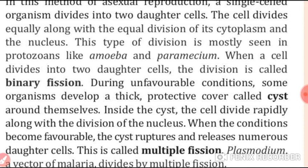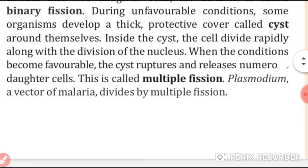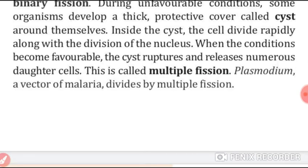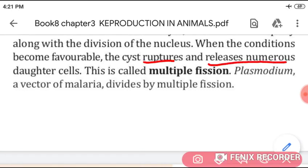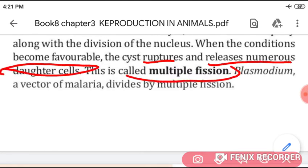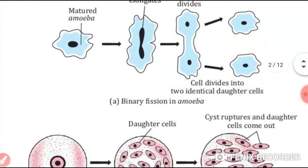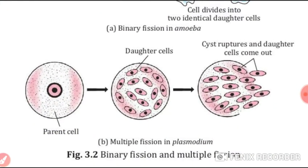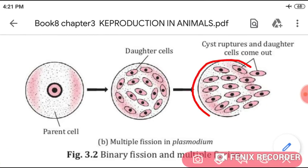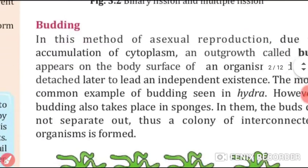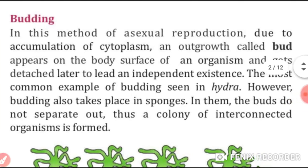During unfavorable conditions, some organisms develop a thick protective cover called a cyst. Inside the cyst, the cell divides rapidly along with the nucleus. When favorable conditions return, the cyst ruptures and releases many daughter cells — this is called multiple fission. This happens in plasmodium, which is a factor of malaria. In the diagram, you can see amoeba producing the cyst, and when favorable conditions come, the cyst ruptures and all daughter cells come out.